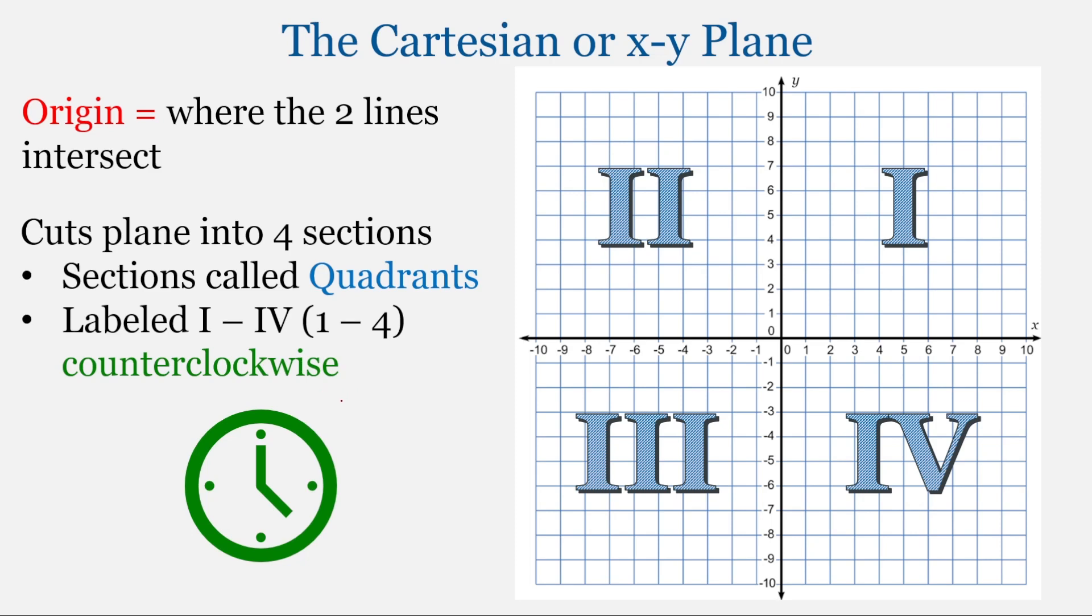So counterclockwise. Think of a clock. And when you have a clock, the hands of the clock move in a particular direction. And that direction is called clockwise, and sometimes that's abbreviated CW. When we add counter in front of it, we're going to go in the opposite direction, the opposite direction in which the hands are moving. And that's called counterclockwise, and that can be abbreviated CCW.